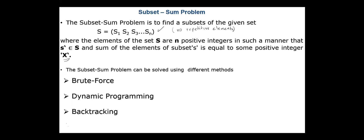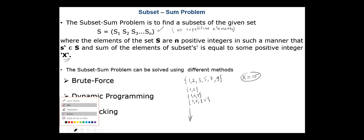According to the brute force method, we have to find all the subsets, and from these subsets find out the ones that sum to the integer value x. For example, if we have the set of numbers {1, 2, 3, 5, 7, 9} and x equals 15, then we have to find all the subsets that sum to this value. The complexity of the brute force method is very high — Big O of 2 to the power n.